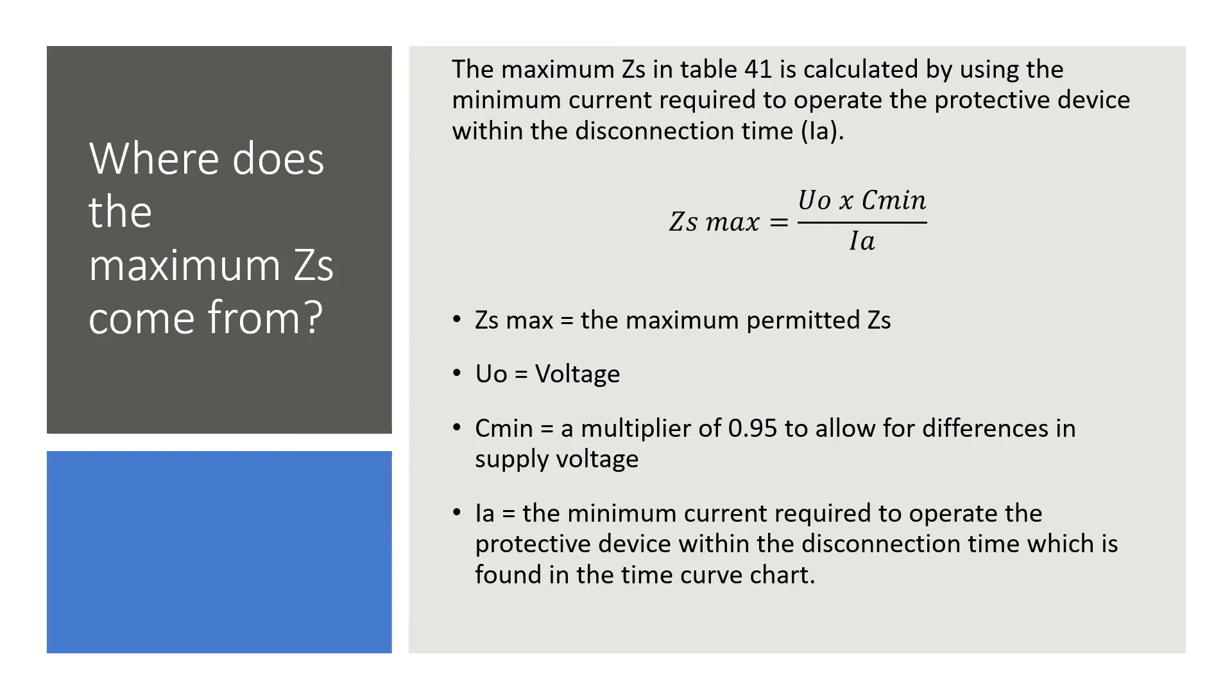The values for Ia can be found on the time curve chart for the protective device. For protective devices that are included in the time curve charts in BS7671, there is a table next to the chart which shows the minimum current to operate the protective device within the disconnection time. For devices that aren't shown in BS7671, such as MCCBs, the information can be requested from the manufacturer.